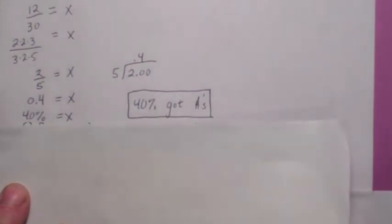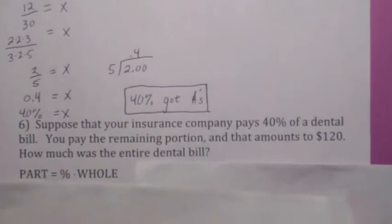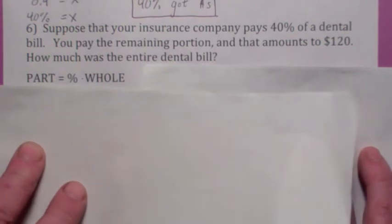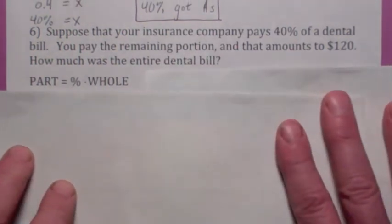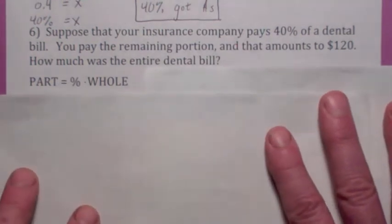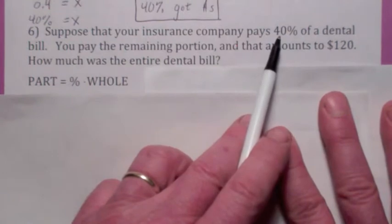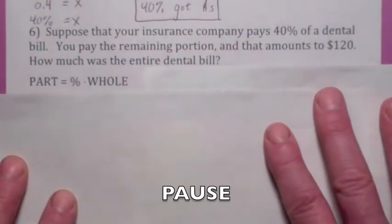All right. We've got time for one more here. On this last one, I just want to give you a hint. This one's kind of sneaky. This one's a little trickier. If you read it carefully, you have to decide what's the part, what's the whole, and what's the percent. My hint is be very careful when you think about what the percent is. Okay, go ahead and hit the pause button. We'll go over it in just a second.